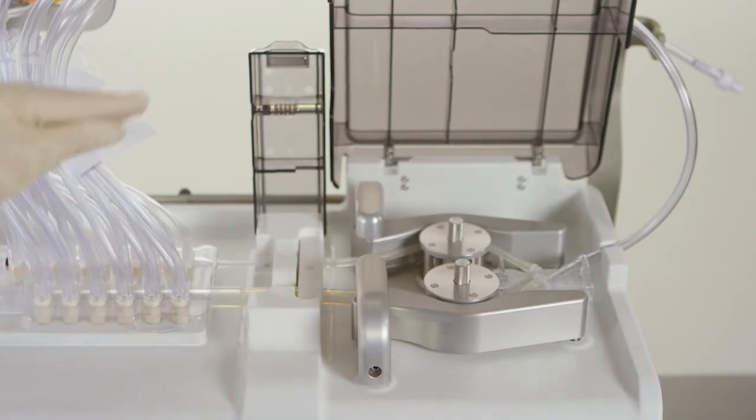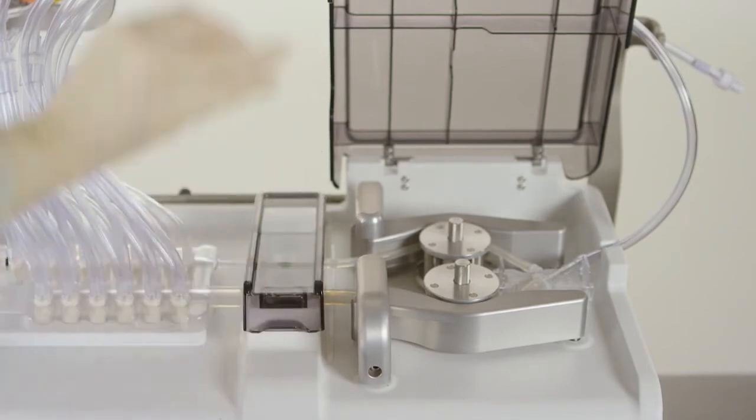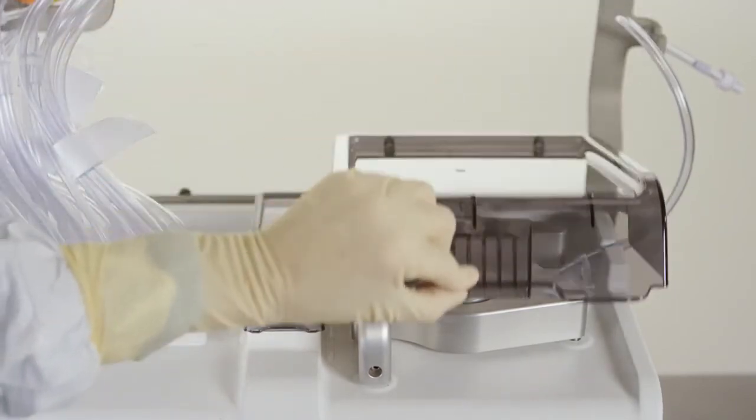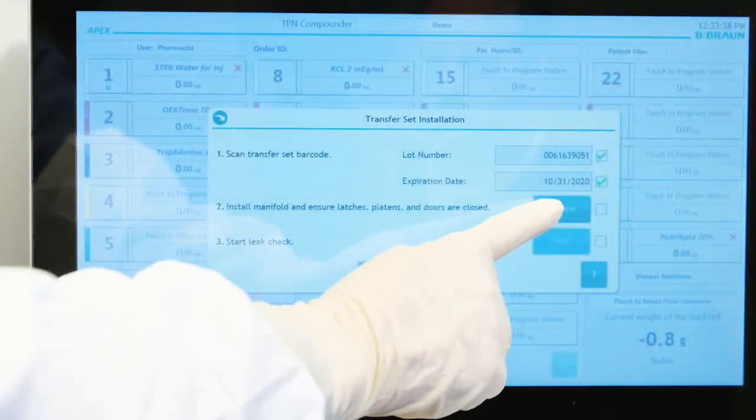Carefully lower the pump and detection sensor doors until they lay flat over the rotors and sensors. If properly assembled, you should not meet with any resistance when closing the doors. Inspect the transfer set to ensure that it appears properly installed. If it does, tap confirm.